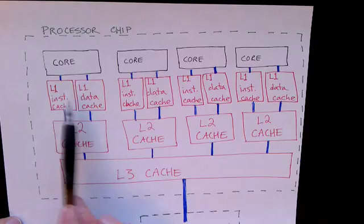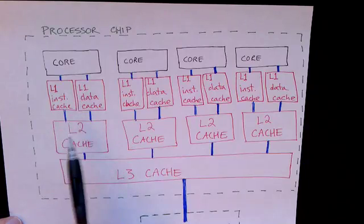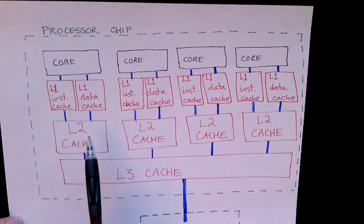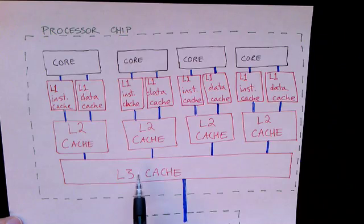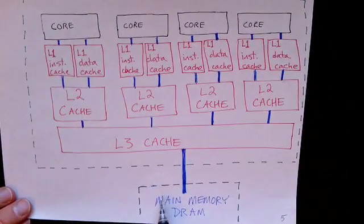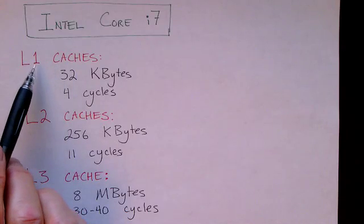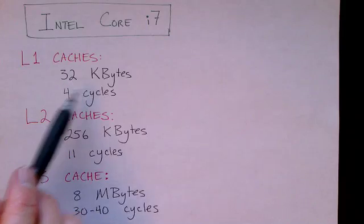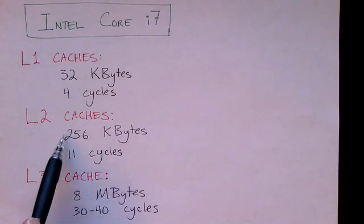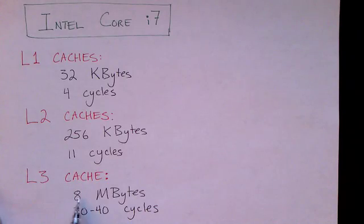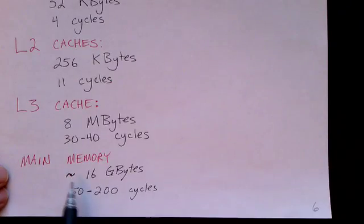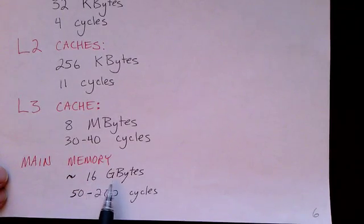The L1 caches are small but super fast. The L2 caches are larger but not quite as fast. The L3 cache is much larger yet and slower still. And main memory is even bigger and slower. For the Intel chip, the L1 caches are 32 kilobytes, the L2 caches are 256 kilobytes, and the L3 cache is 8 megabytes. You can compare that to main memory, which might be 16 gigabytes.